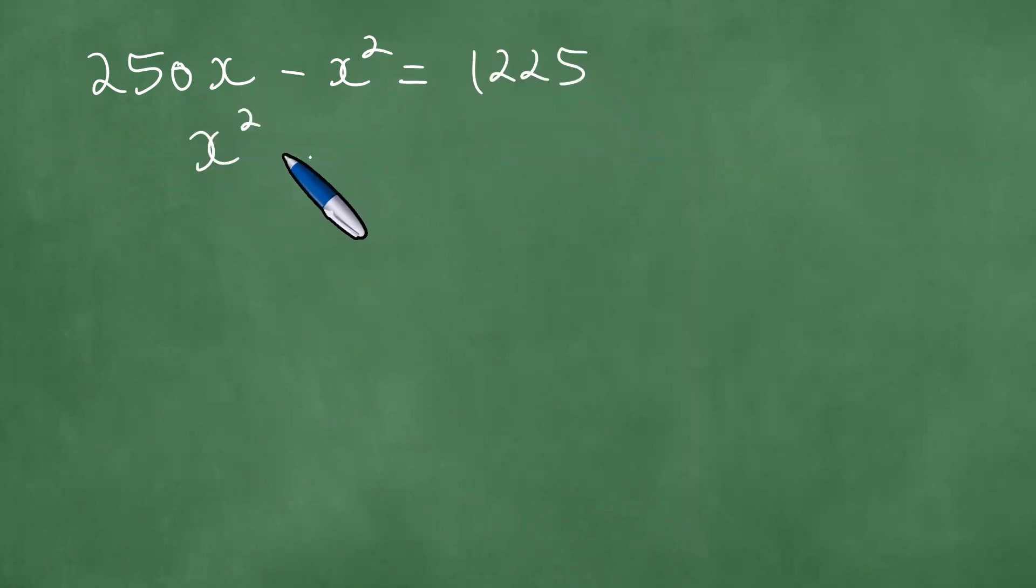Minus x squared minus 250x plus 1225, and the result is 0. Like so. Factorize x squared minus x and minus x.